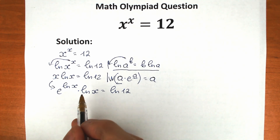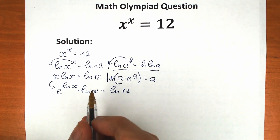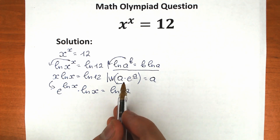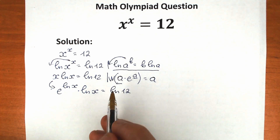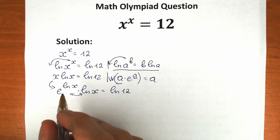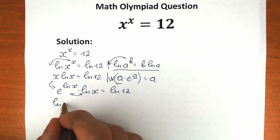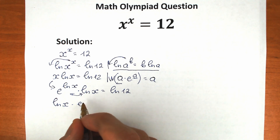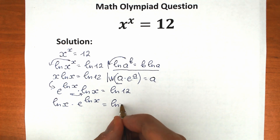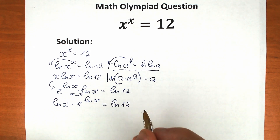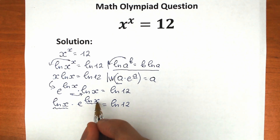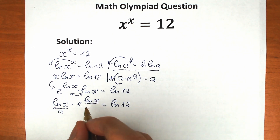This is a great moment to apply the Lambert W function, but we have the wrong order. We need to swap the positions — which is valid since this is a product — giving us ln(x) times e^(ln x) = ln(12). Notice that ln(x) appears both as the coefficient and as the exponent, so they are absolutely the same expression.